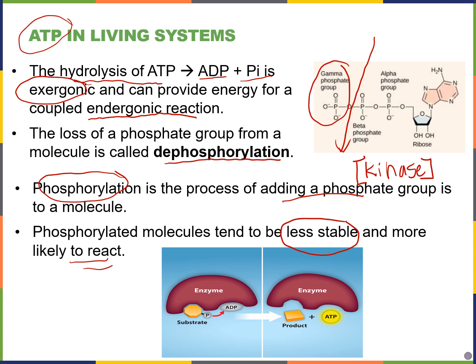We saw phosphorylation in the previous chapter with the sodium-potassium pump — it pushes three sodium out of the cell, two potassium in, and uses one ATP. When that ATP is hydrolyzed, the phosphate group binds to the pump and increases its affinity for sodium and potassium. In this case, ATP bonded to a substrate generates a product, and we're stealing a phosphate group from a substrate to produce energy we can use later.